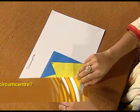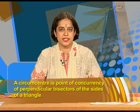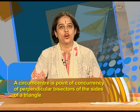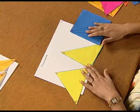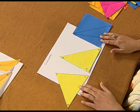Now we will explore the position of circumcenter in different types of triangles. What is a circumcenter? A circumcenter is the point of concurrency of perpendicular bisectors of the sides of a triangle. You know how to find the perpendicular bisector — we have done this activity earlier through paper folding. Let us see the position of circumcenter in three different types of triangles: an acute triangle, a right triangle, and an obtuse triangle.